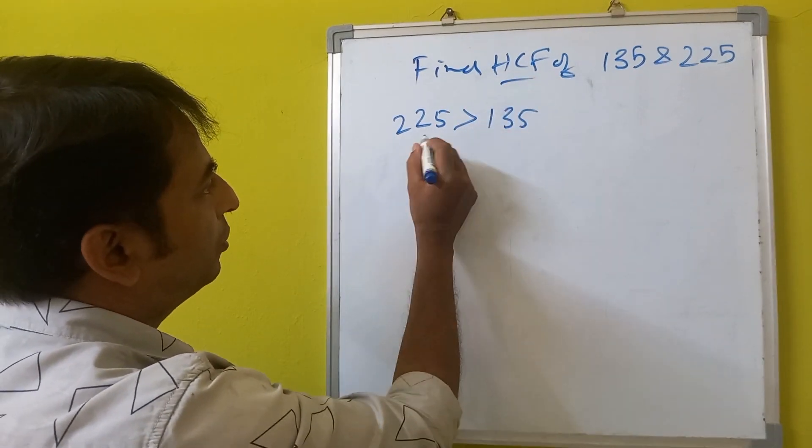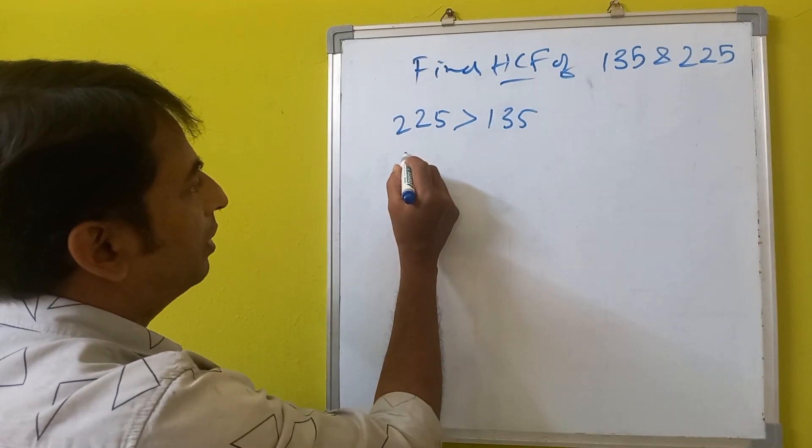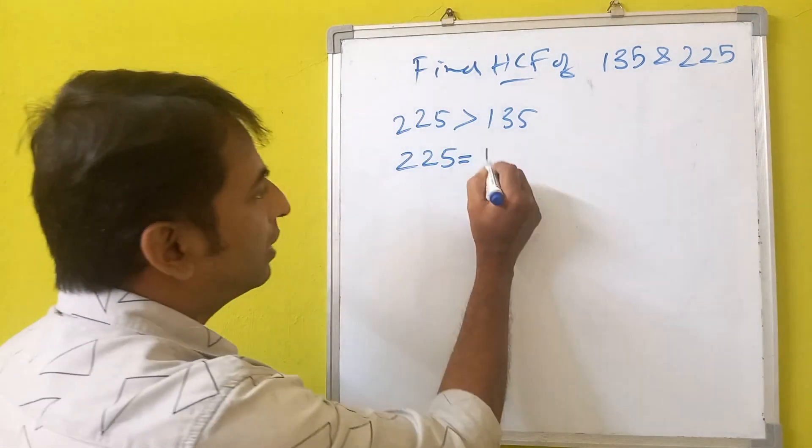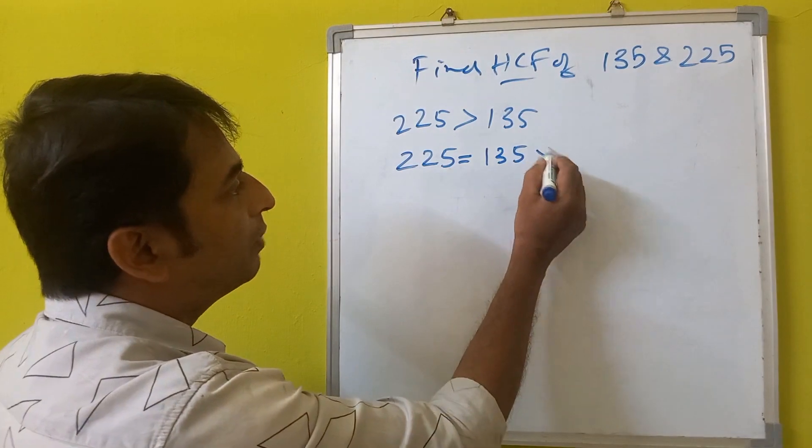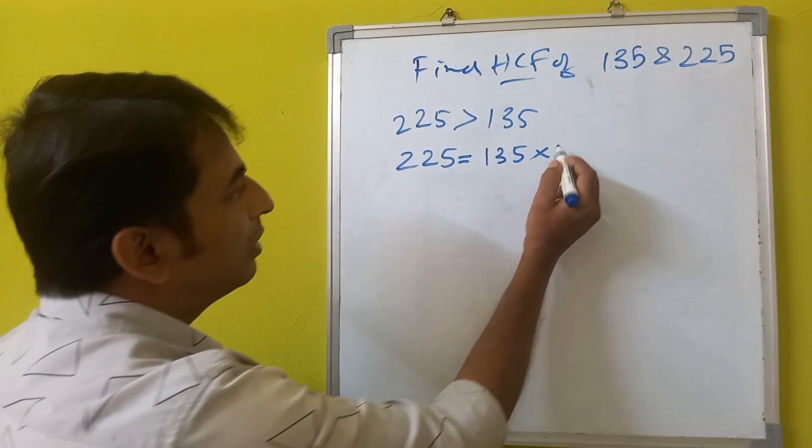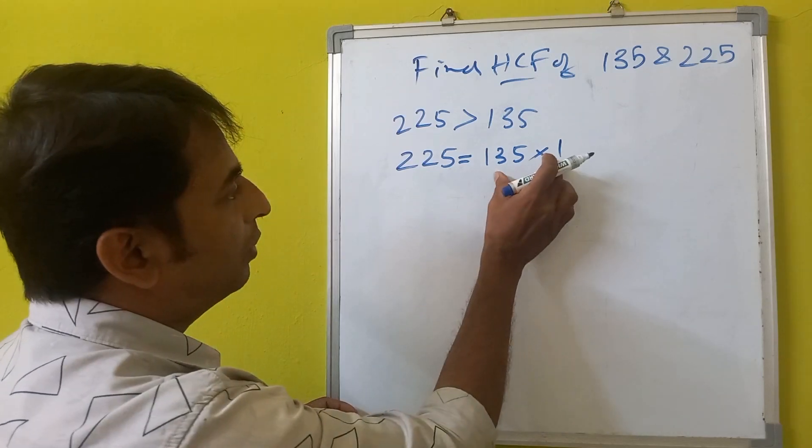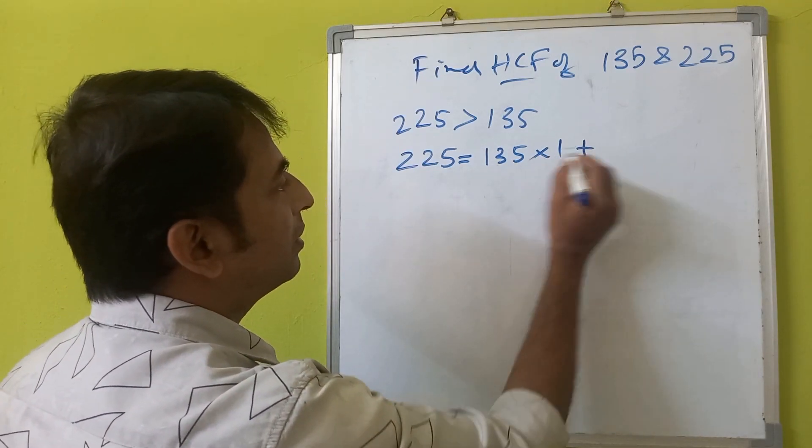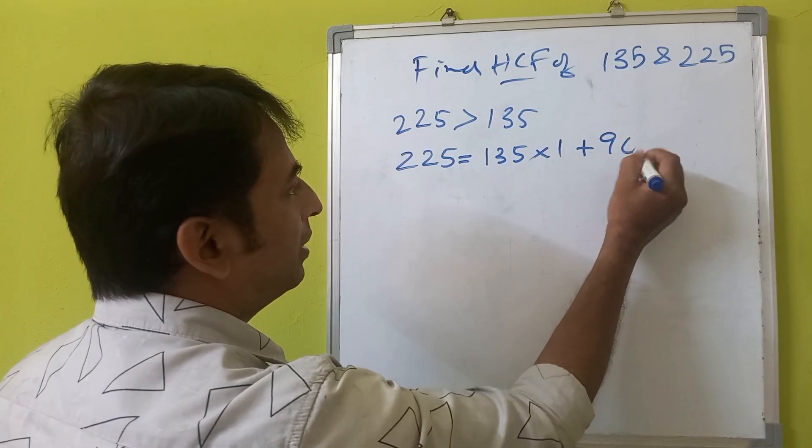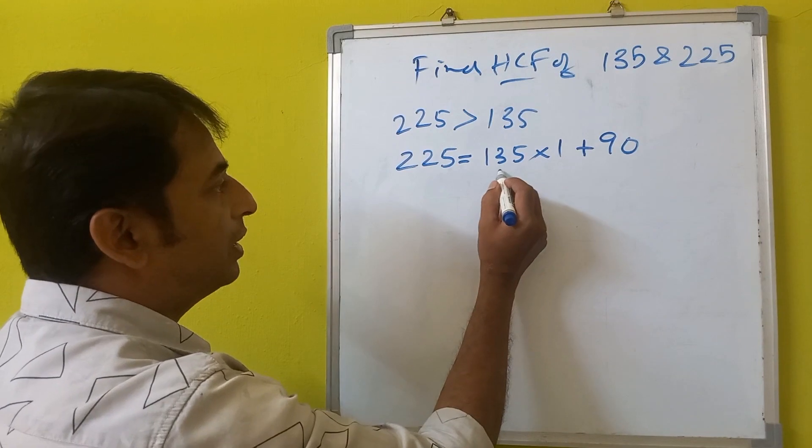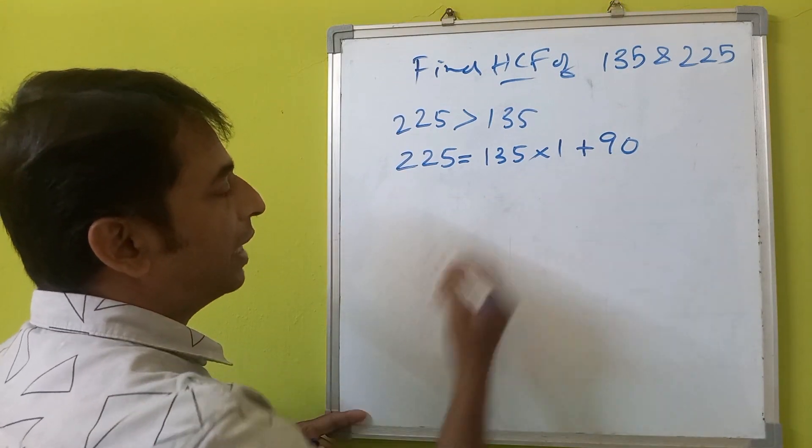Here, as 225 is greater than 135, we will write 225 equals 135 multiplied by 1. So 135 times 1 plus there is a remainder 90 here. You get 225 equals 135 into 1 plus 90.